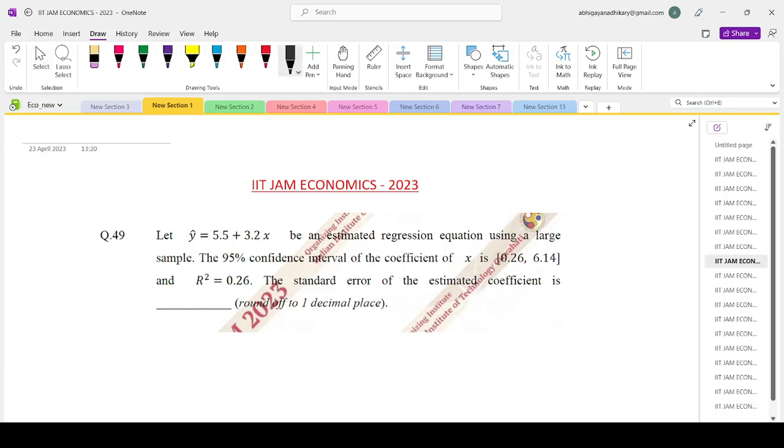Hello everyone, welcoming you to Shorak Sir's classes. Today we are looking at the IIT Jam Economics paper 2023, question number 49. Let y hat equals 5.5 plus 3.2x be an estimated regression equation using a large sample. The 95% confidence interval of the coefficient of x is 0.26 to 6.14 and R squared equals 0.26. The standard error of the estimated coefficient is how much?